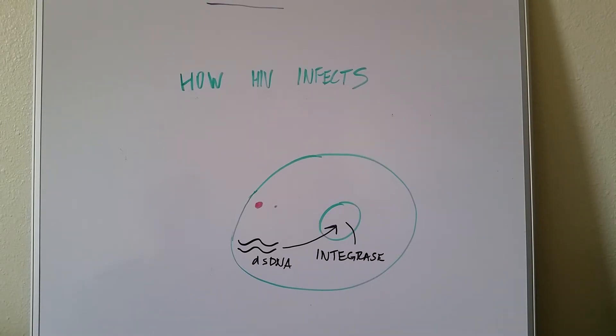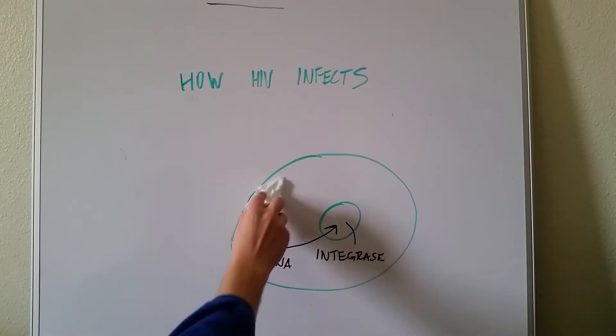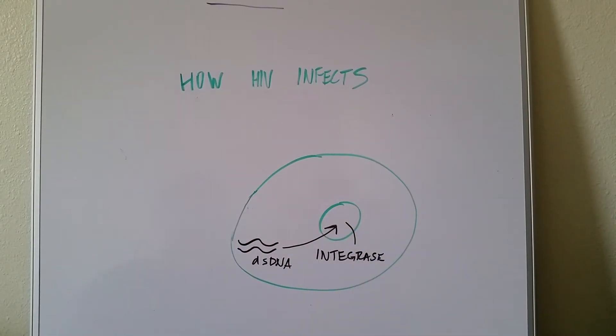It's now, the HIV has effectively taken over and harnessed this normal cell. It is infected, and now it'll start, just like a normal cell replicates its own DNA, will now also replicate this double-stranded DNA that has been integrated into the normal cell's genome.